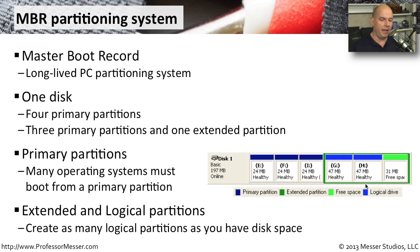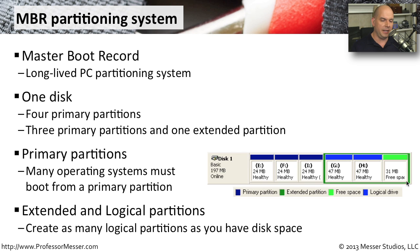This picture is a good example of how you might set something like that up. You might have three primary partitions — this is from a Windows device, so it uses E, F, and I colon designations to show the mount points to those particular drives and how you access them in the operating system. You can see an extended partition has been set up, and that extended partition has within it some logical drives — a G drive and an H drive — plus free disk space. You could create many more logical drives inside that extended partition. Whether you're doing this in Windows, Linux, or macOS, the idea is exactly the same when using the MBR partitioning system.